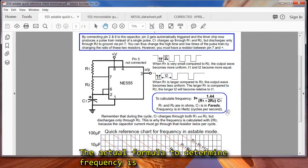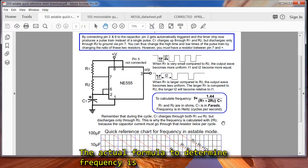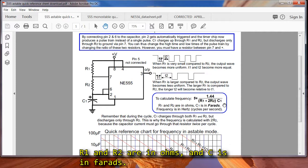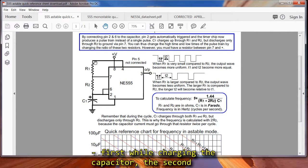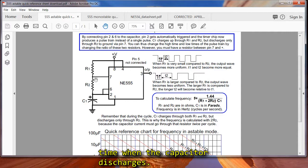Now the actual formula to determine the frequency is frequency equals 1.44 over R1 plus 2R2 times C, where R1 and R2 are in ohms, and C is again in farads. R2 factors into the equation twice, because the current to the capacitor has to go through R2 twice. First while charging the capacitor, then the second time when the capacitor discharges.